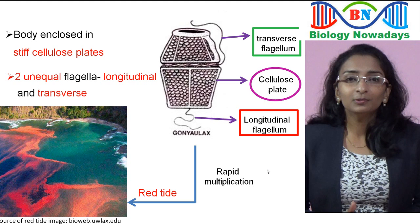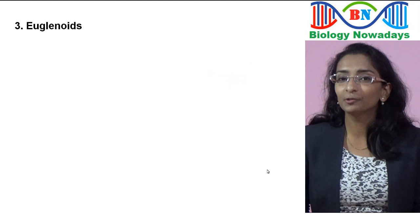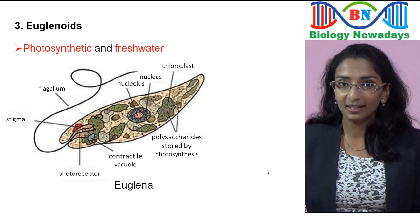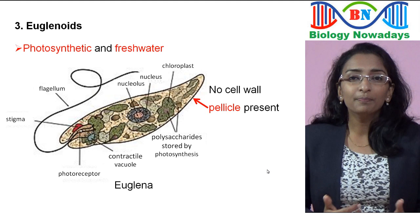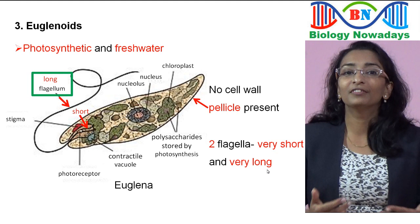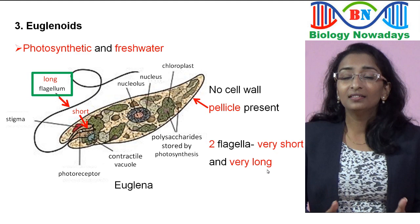Let's see the third group under Kingdom Protista — the euglenoids. They are mainly photosynthetic. An example of euglenoids is Euglena. They don't have a rigid cell wall; instead, they have a protein-rich layer called the pellicle, which makes their body flexible. They have two flagella — a very short one and a very long one. The long flagellum helps in their movement, while the short flagellum may function as a light receptor.